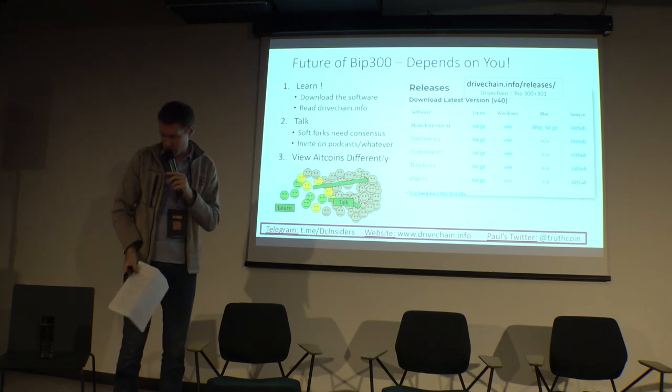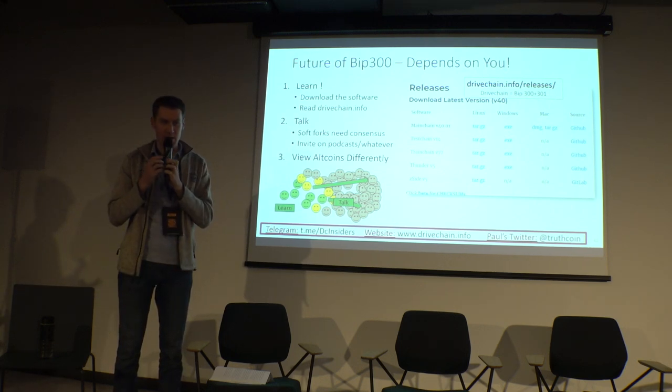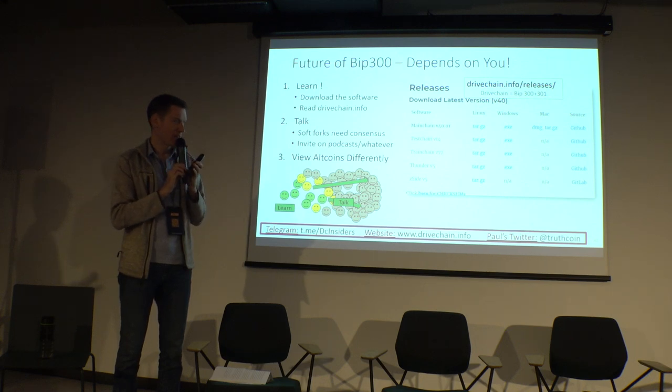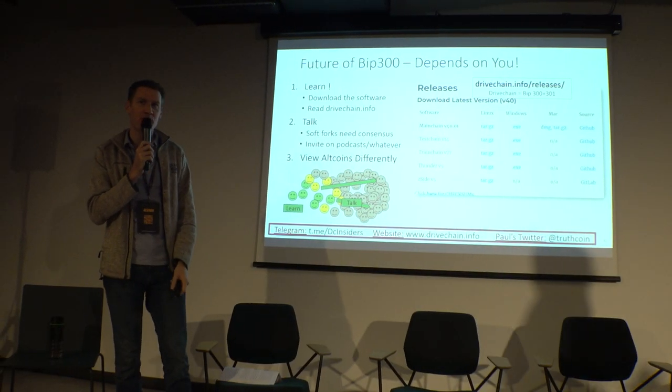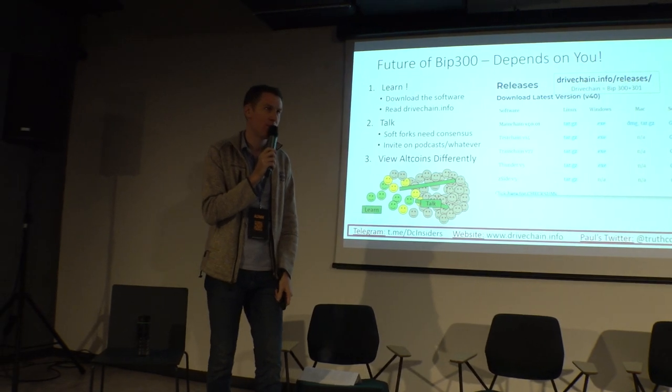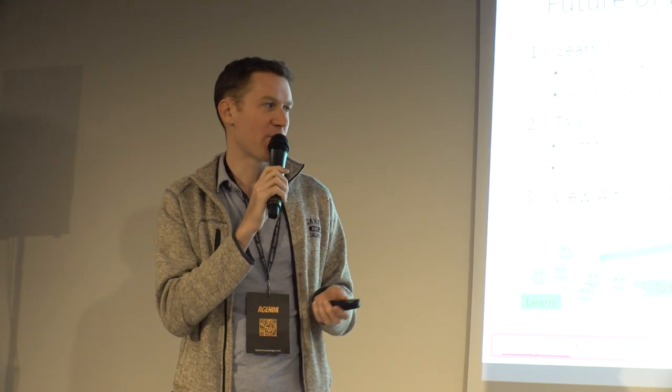That's really the end of the talk — I tried to rush through it. I'd prefer to answer questions. Any pros or cons relative to other proposals like space chains? Space chain is kind of like drivechain where the coins can never come back at all. I think Ruben Somsen reacted to the miners-can-steal critique and thought maybe he could solve it by preemptively destroying all the coins. But I don't see the point — wouldn't it be better to hopefully get them back instead of immediately giving up on that?